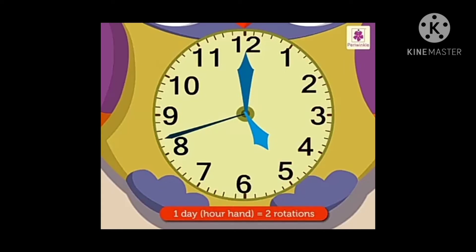There are 60 markings around the face of the clock. These markings tell us the time in minutes and seconds. The minute hand moves from one marking to another every minute. It completes one rotation in one hour.